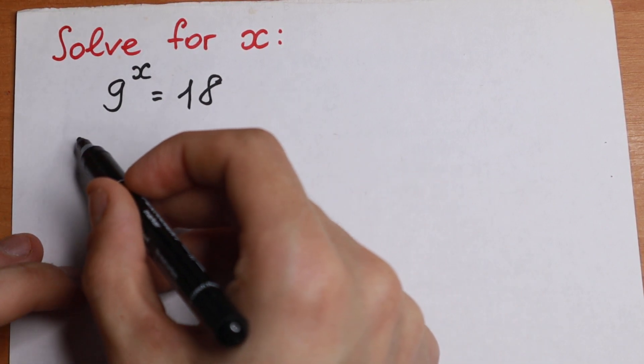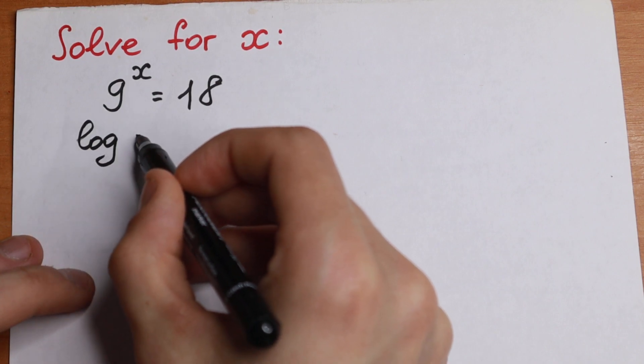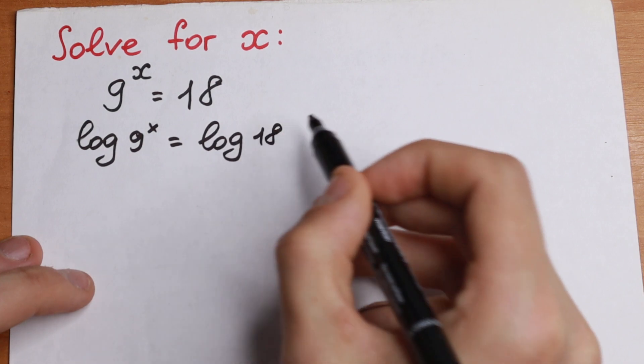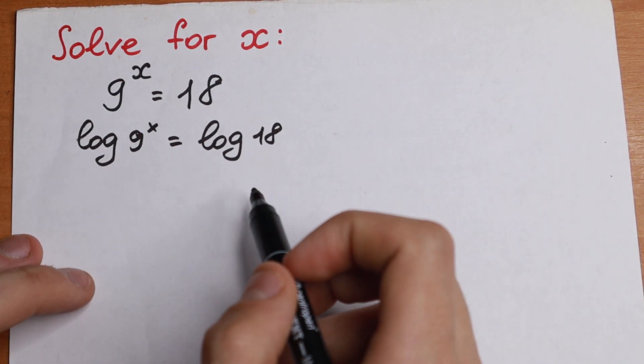So let's do this, let's take log on the left side, log 9 to the power x equal to log 18. So as you can see we're just taking log from both sides.